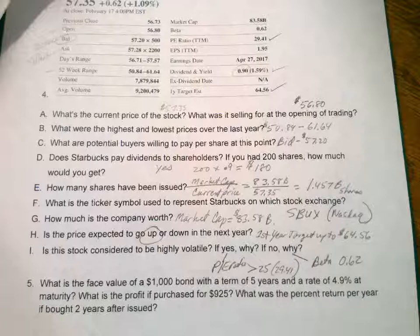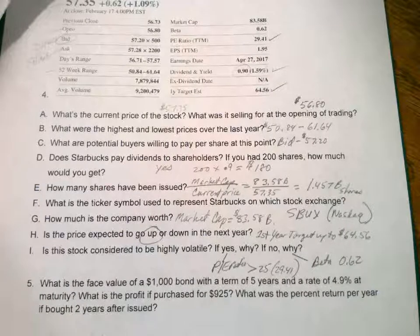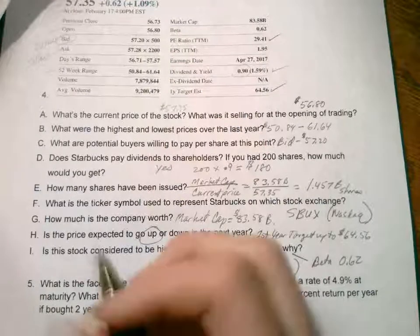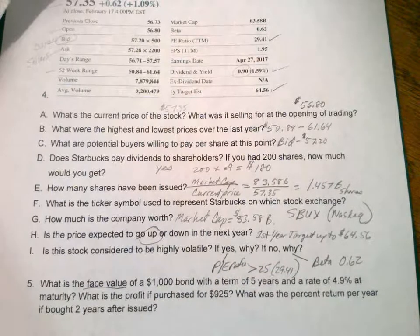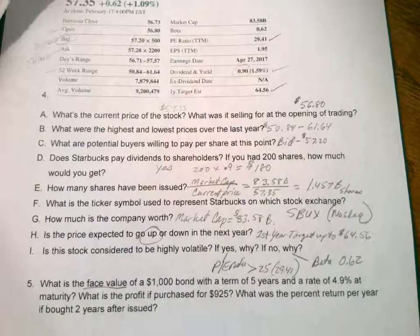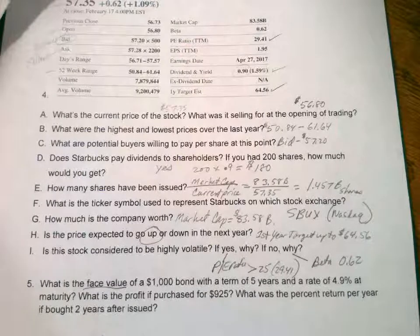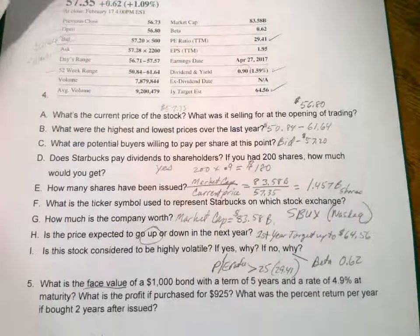All right — face value of a $1,000 bond with a term of five years at a rate of 4.9% at maturity. Face value is the ending value of the bond — the original cost plus interest.